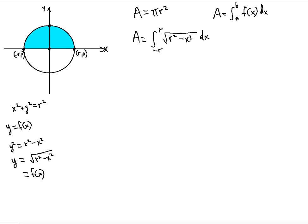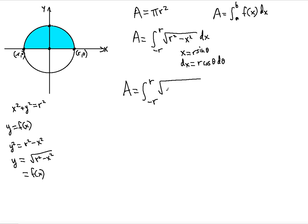You might be wondering how to take this integral — you can't use u-substitution, but you can use trigonometric substitution. For the form r squared minus x squared, where r is a constant, this calls for x equals r sine theta, and dx equals r cosine theta d theta, because you're differentiating both sides implicitly. So we can rewrite the area integral: inside the square root we have r squared minus r squared sine squared theta, and dx becomes r cosine theta d theta.